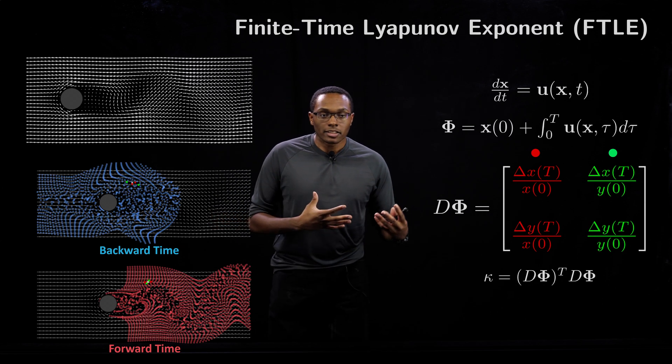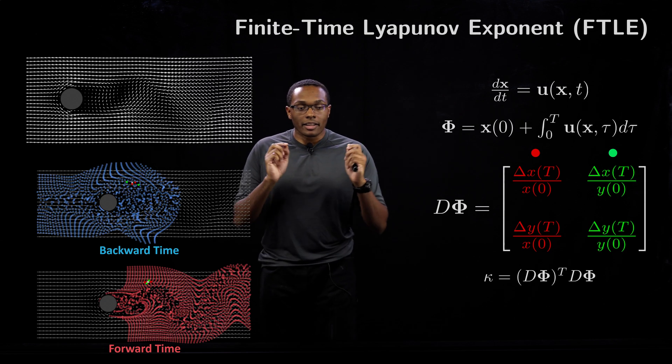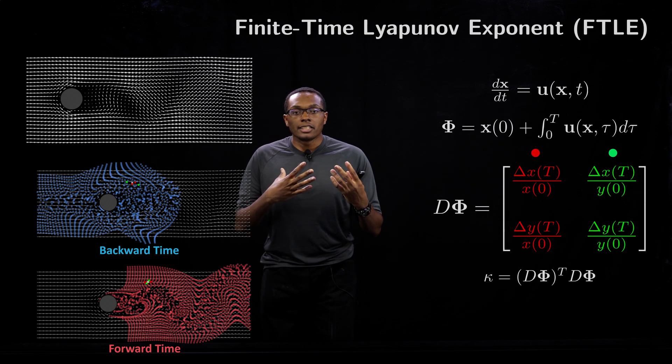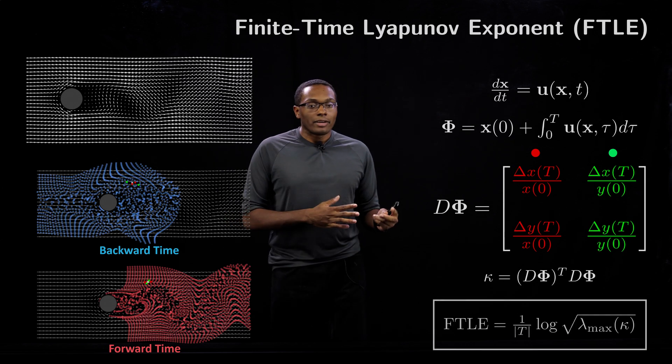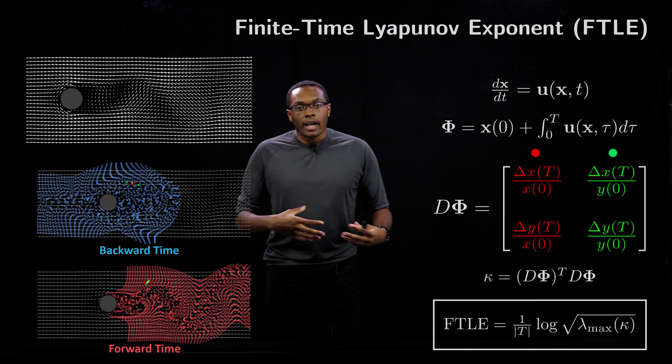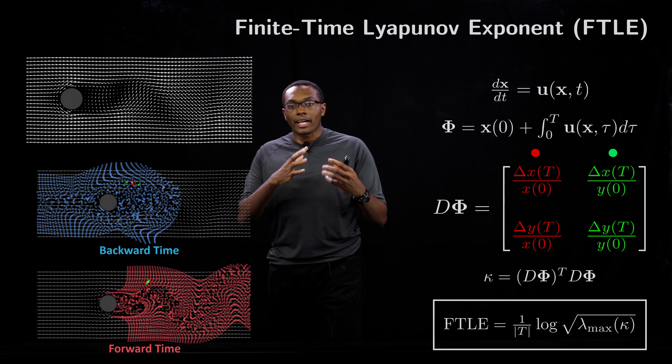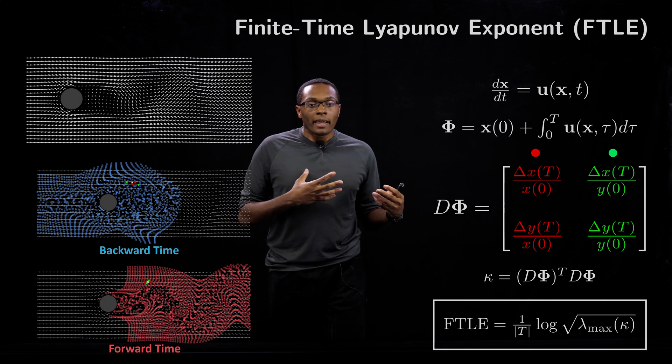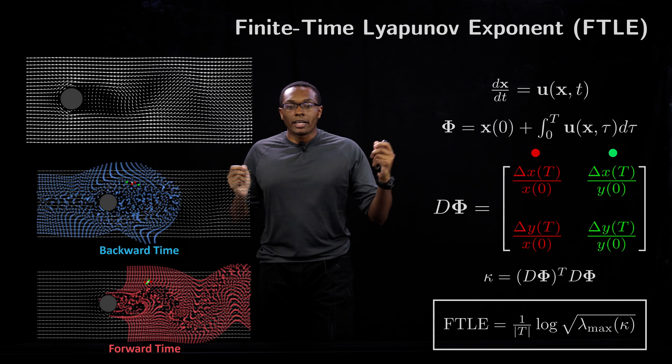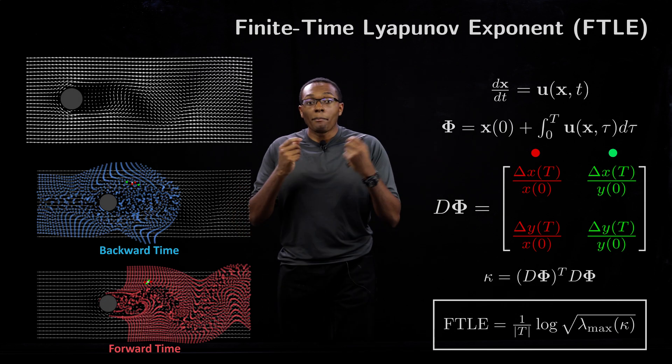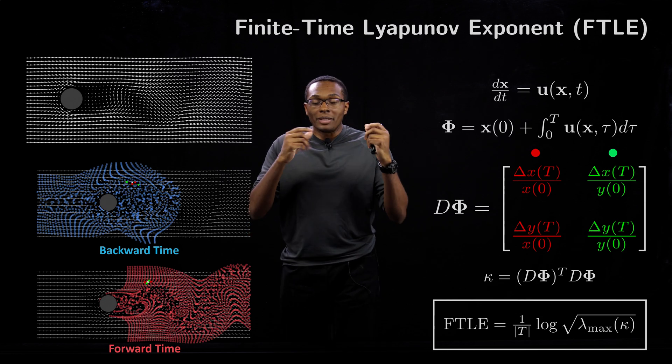The strain tensor has information purely on the distances between neighboring particles and not their rotational aspects. The eigenvalues of the strain tensor correspond to how much stretching and compression we get in the flow field. We're primarily interested in the maximum eigenvalue, which tells us how much the particles maximally diverge away from each other.